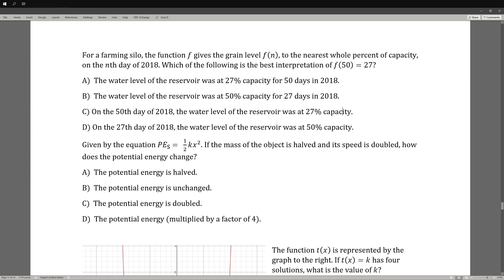For a farming silo, the function f gives the grain level f of n to the nearest whole percent of capacity on the nth day of 2018. Which of the following is the best interpretation of f(50) = 27? In this case, we need to figure out what 50 replaces. 50 replaces n, and n represents the nth day, or how many days into the year of 2018 we are at. However, A and B are just random 27 and 50 days into 2018, so those would be incorrect automatically. We need to look at the 50th and the 27th day.